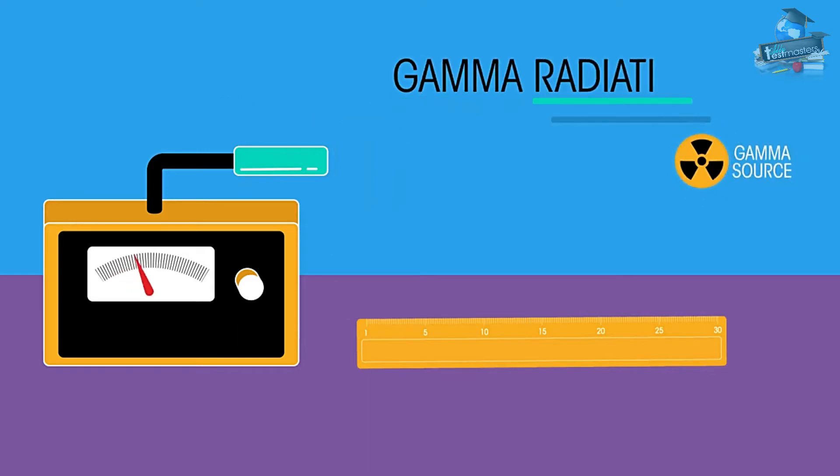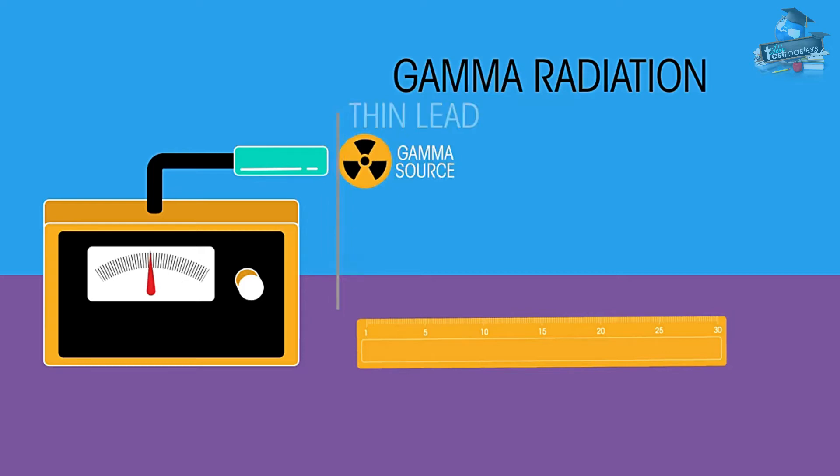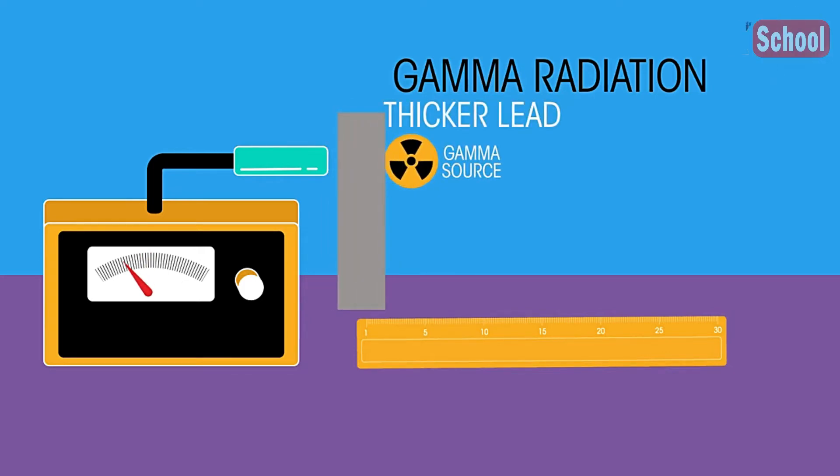And finally gamma radiation. Aluminium has no effect. Thin lead has some effect. And even thicker lead more so. But a significant count rate still continues. We can see that gamma rays have excellent penetration as they are neutral high energy electromagnetic waves.